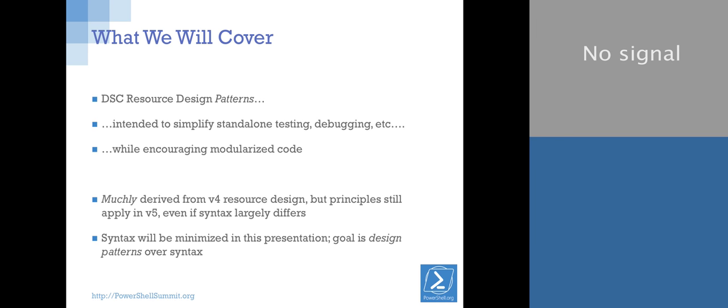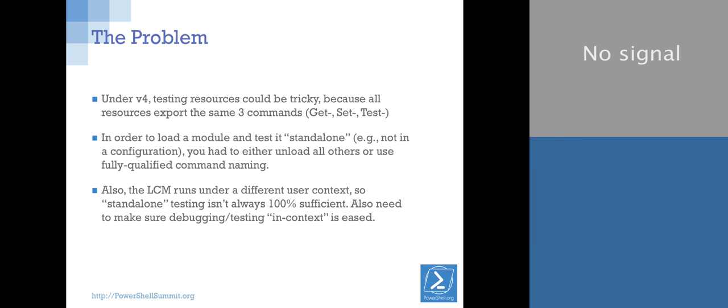How many of you have worked on a DSC resource in version 4? For those who haven't, it's basically a script module - a single text file with at least three functions that have special names. That's what DSC looks for when it tests configuration compliance, sets it, or gets the current configuration. In version 5, that structure stays the same but gets defined as a class with methods.